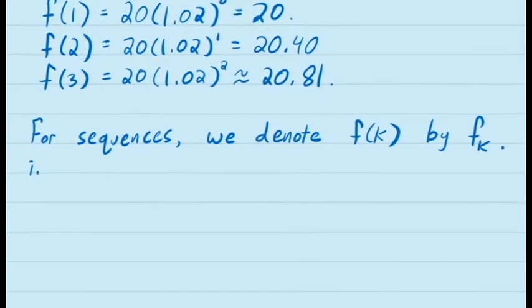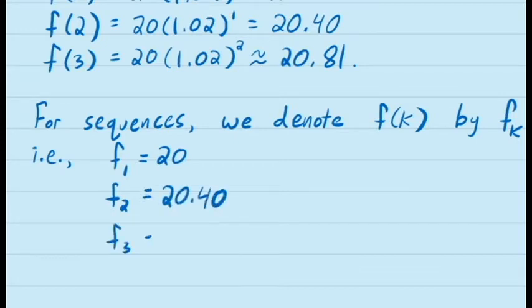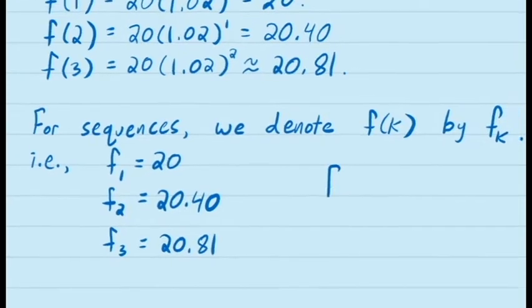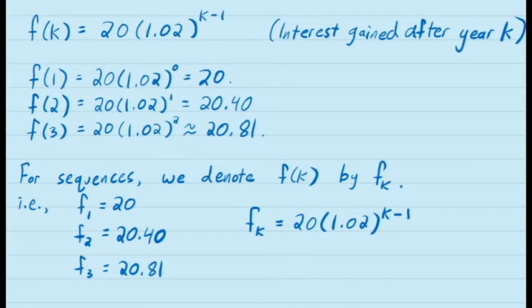This means, for example, f1 would be $20, which is the interest earned in the first year. f2 would be $20.40, which is the interest earned in the second year. f3 would be $20.81, which is the interest earned in the third year, and so on. One question that we might ask is: how much interest are you earning overall? For example, what is the total amount of interest earned in the first three years?